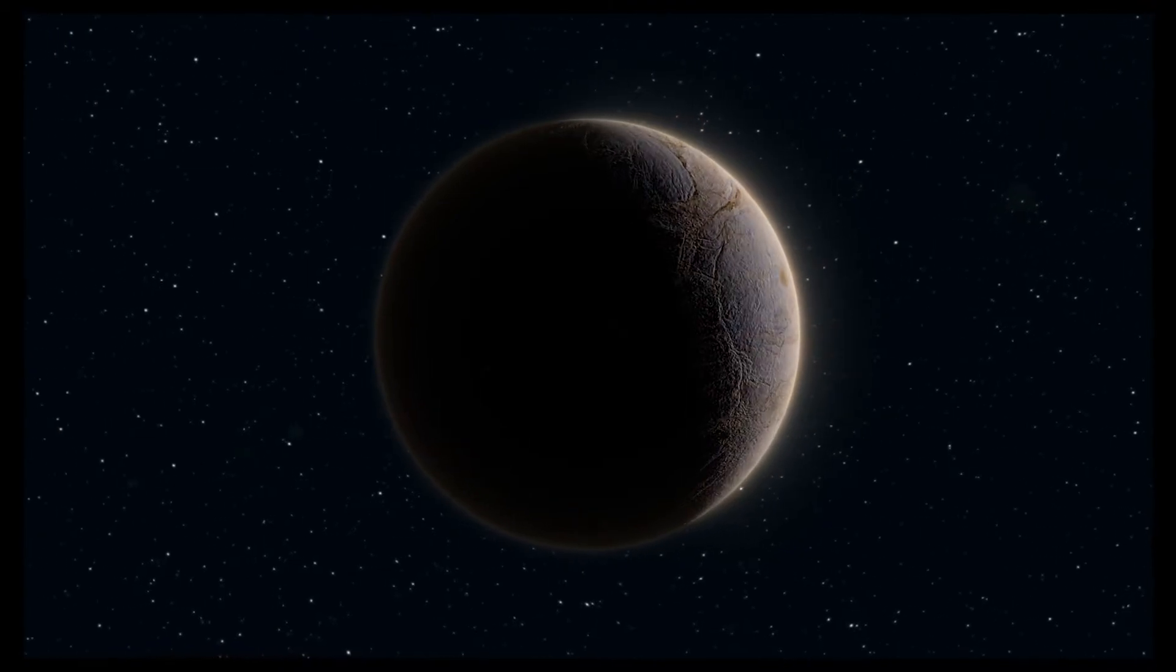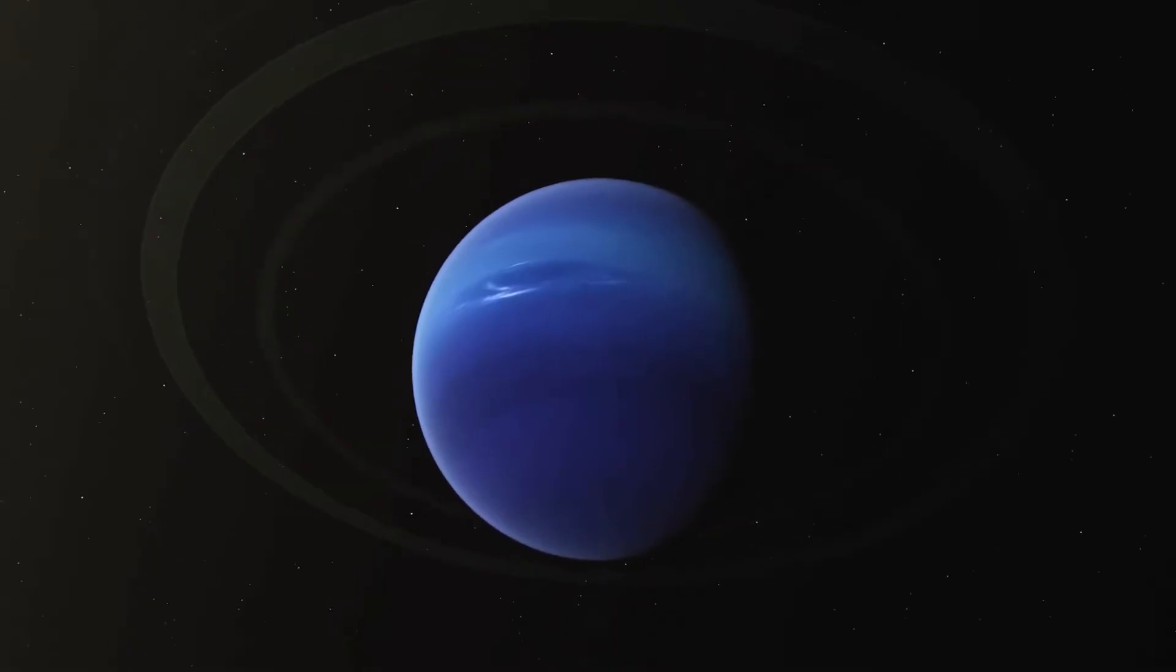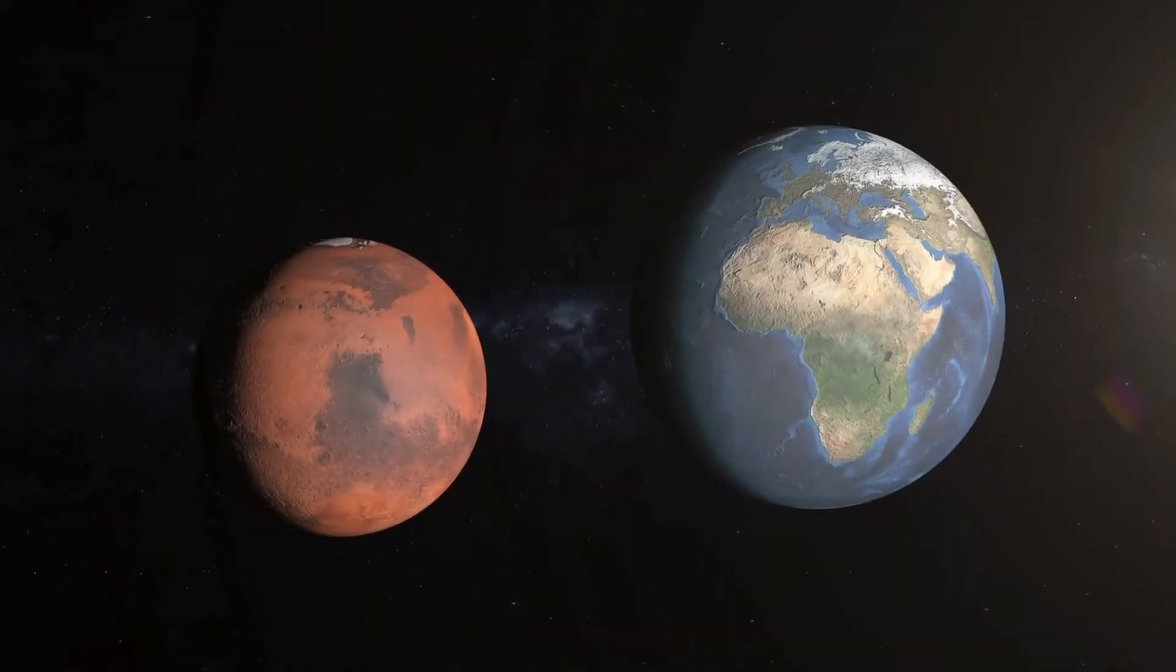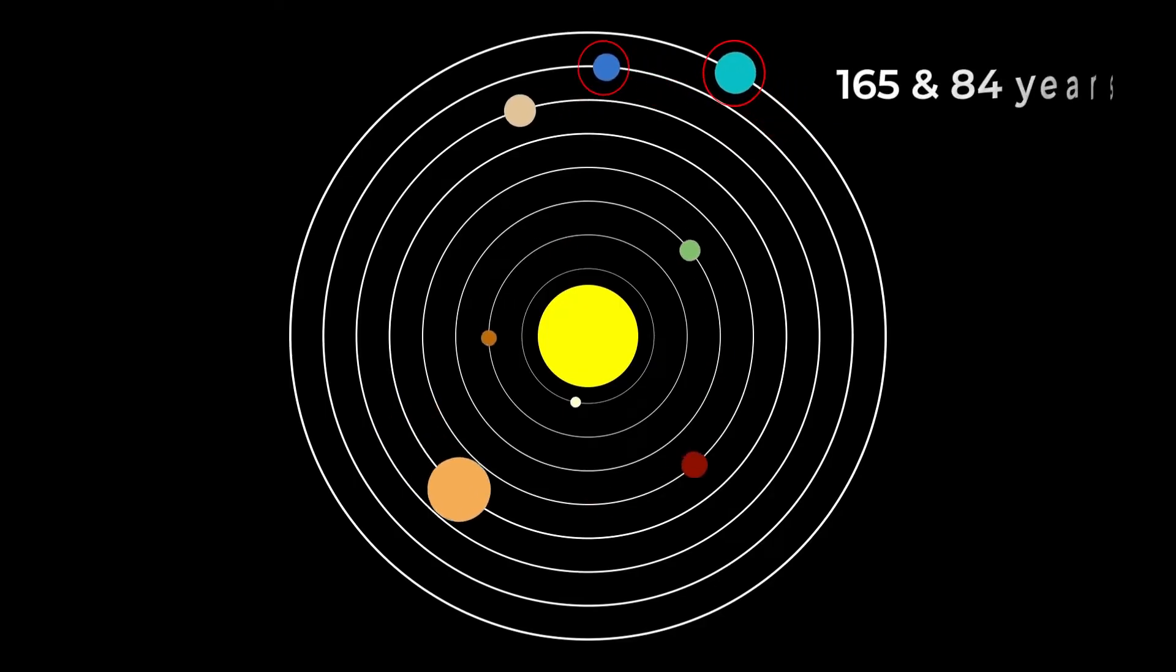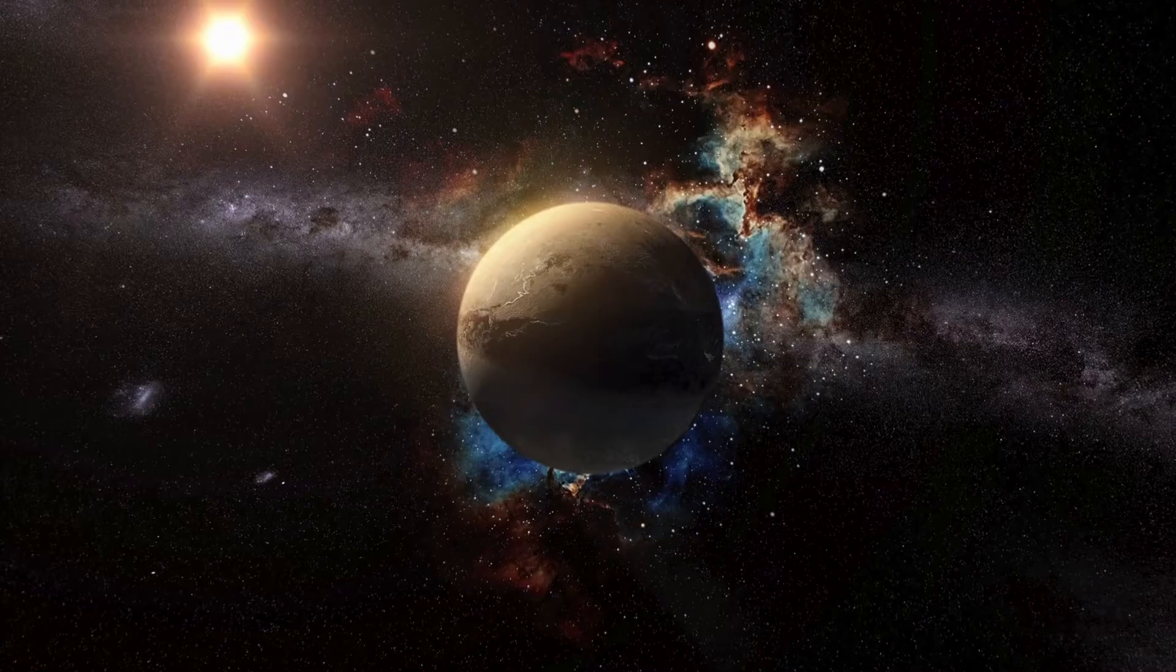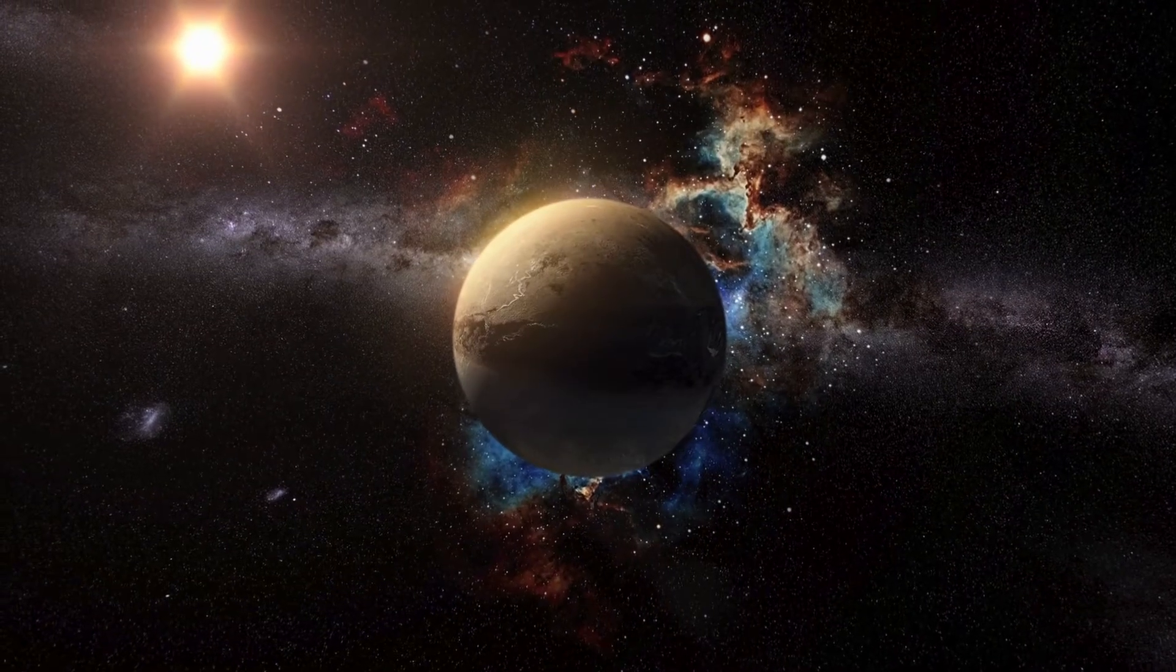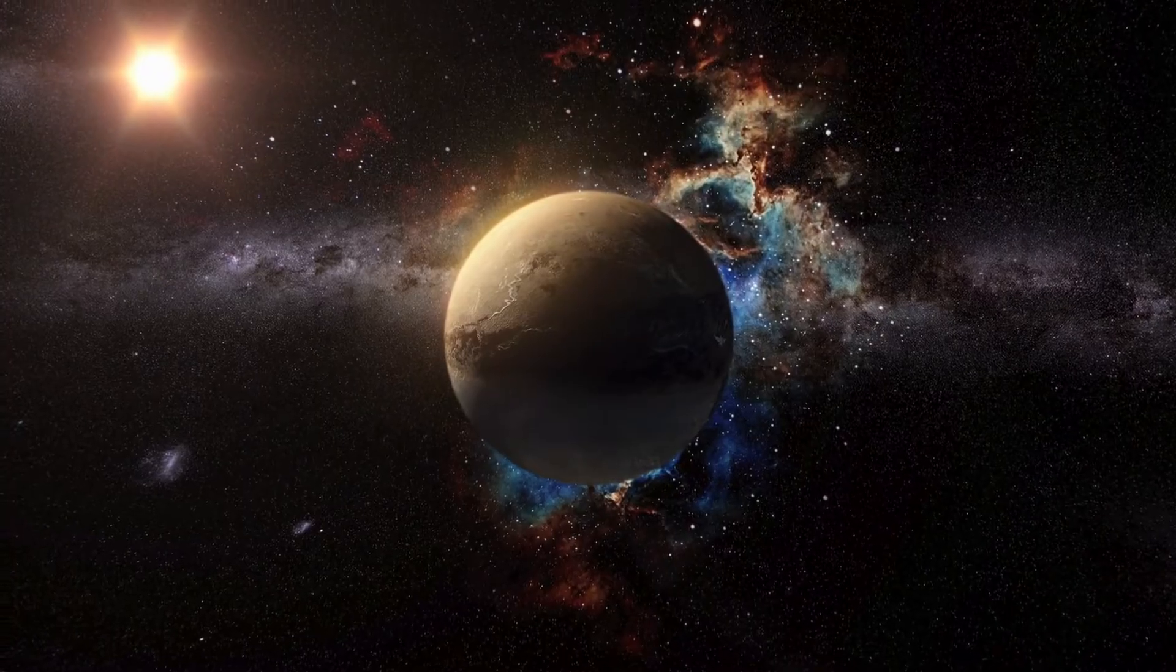If a brown dwarf were to enter the solar system, the first to feel its effects would be the outermost planets and finally the rocky planets. In the case of Neptune and Uranus, these planets orbit the Sun for 165 and 84 years respectively. Meaning that if the brown dwarf moved very fast on its way to the Sun, it might not even run into the path of any of these two planets.